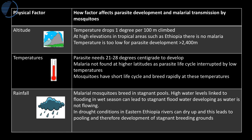The first physical factor is altitude. For every 100 metres climbed, temperature drops by about one degree — the lapse rate. At high elevations in the Ethiopian highlands, elevations exceed 2,400 metres. Above that elevation there is no parasite development because it's too cold. The second factor is temperature: the parasite needs 21 to 28 degrees centigrade to develop within the mosquito. Malaria is not found at high elevations because the parasite life cycle is interrupted by low temperatures.